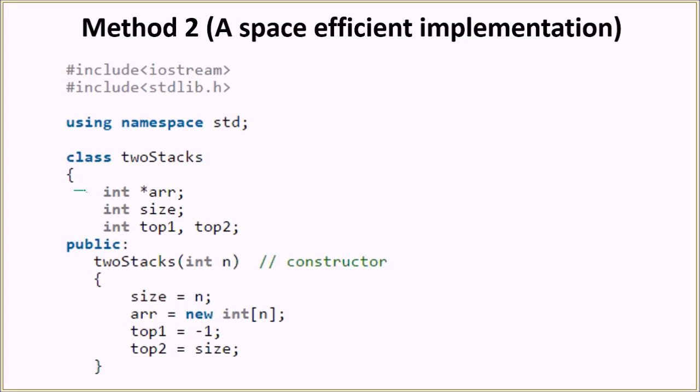It has the actual array, then the size of the array, and then we maintain the two top elements, top1 and top2. Inside the constructor, we just pass the size of the array. That is set to the variable size, that n value.